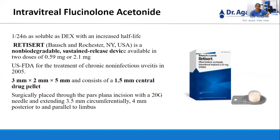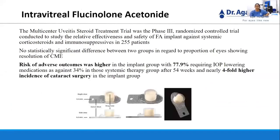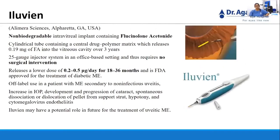Intravitreal fluocinolone acetonide is 124 times less soluble than dexamethasone with an increased half-life. Retisert is a non-biodegradable sustained-release device available in 0.59mg and 2.1mg doses, FDA-approved for treatment of chronic non-infectious uveitis since 2005. It measures 3×2×5mm with a 1.5mm central drug pellet, surgically placed through a pars plana incision with a 20-gauge needle. The MUST trial was a phase 3 randomized controlled trial in 255 patients comparing fluocinolone acetonide implant against systemic corticosteroids and immunosuppressives. No statistical significance was found between groups for CME resolution, however adverse events were higher in the implant group — 77.9% requiring IOP-lowering medications versus 34% in the systemic group, and nearly fourfold incidence of cataract surgery.